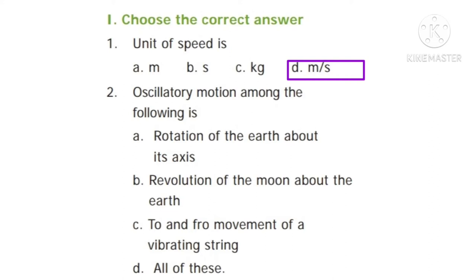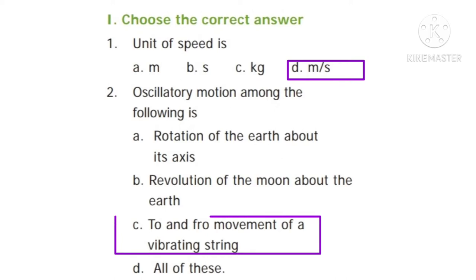Second question: which among the following is an oscillatory motion? Option A: rotation of the earth about its axis. Option B: revolution of the moon about the earth. Option C: to and fro movement of a vibrating string. Option D: all of these. The correct answer is option C — to and fro movement of a vibrating string.